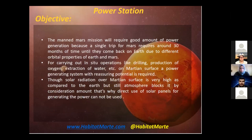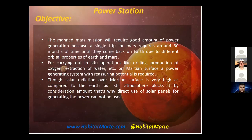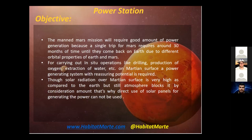The Mars mission will require a good amount of power generation, as a single trip to Mars requires around 30 months until return to Earth due to the different orbital properties of Earth and Mars. For carrying out in-situ operations like drilling, production of oxygen, and extraction of water on the Martian surface, a power generating system with reliable potential is required. Although solar radiance on the Martian surface is greater than on Earth, the atmosphere still blocks a considerable amount, making direct use of solar panels inefficient.